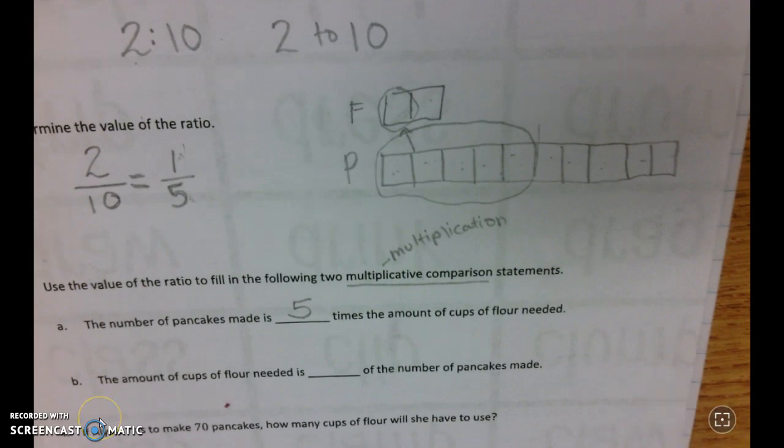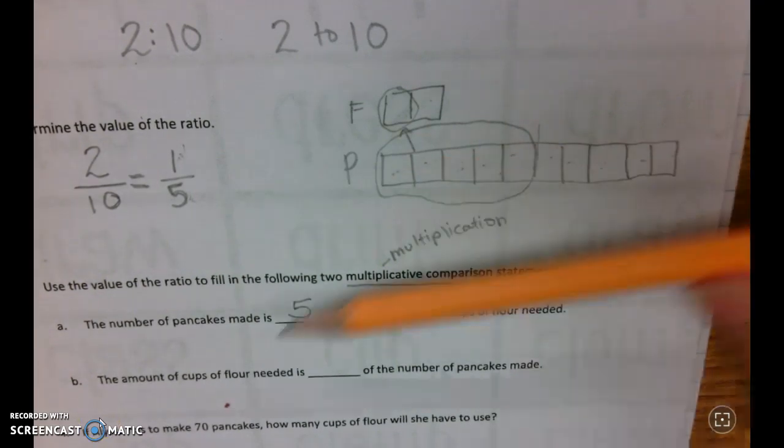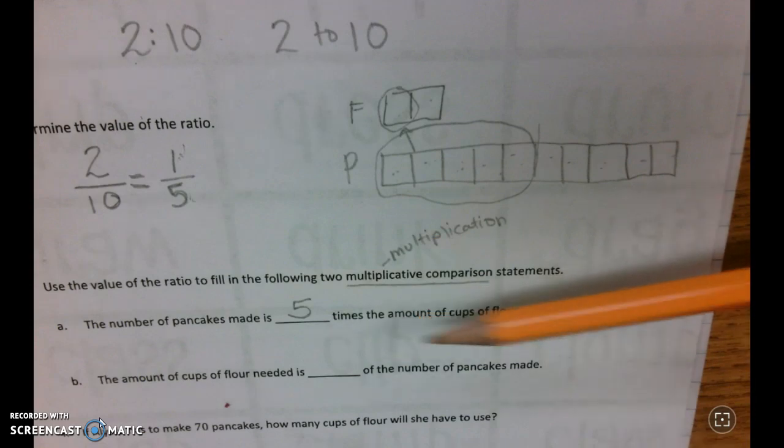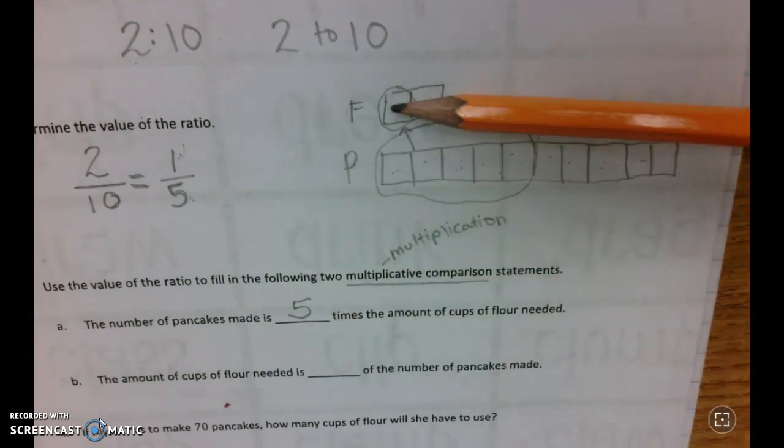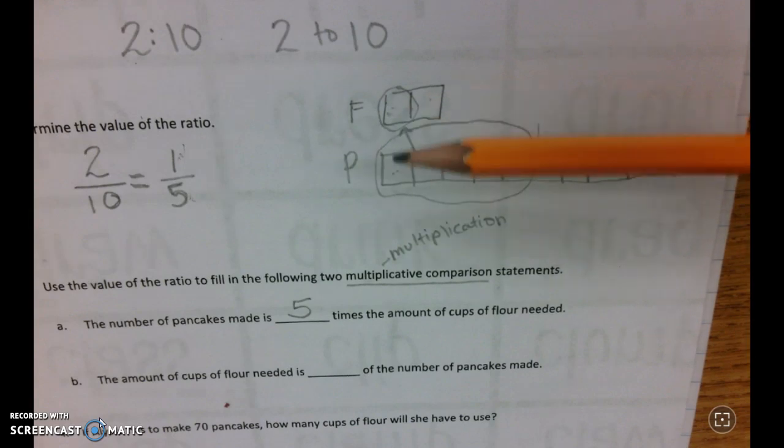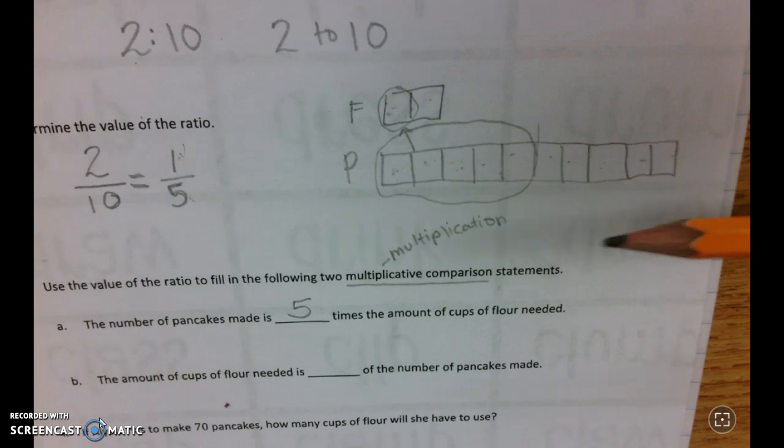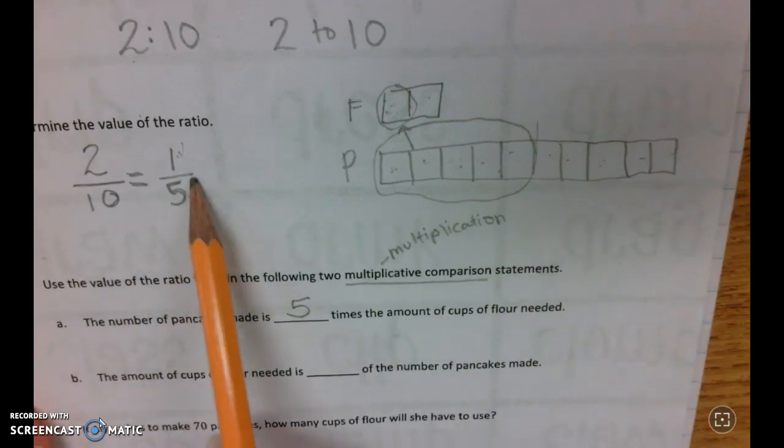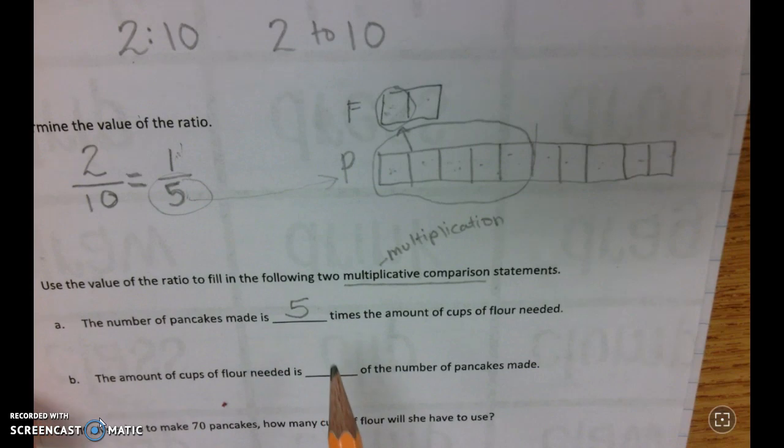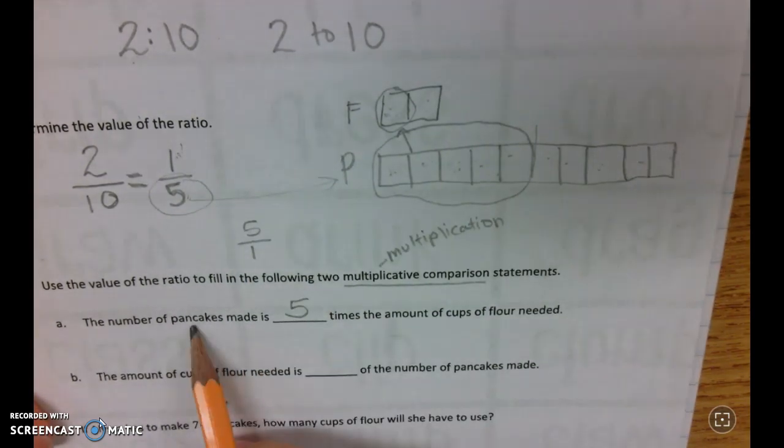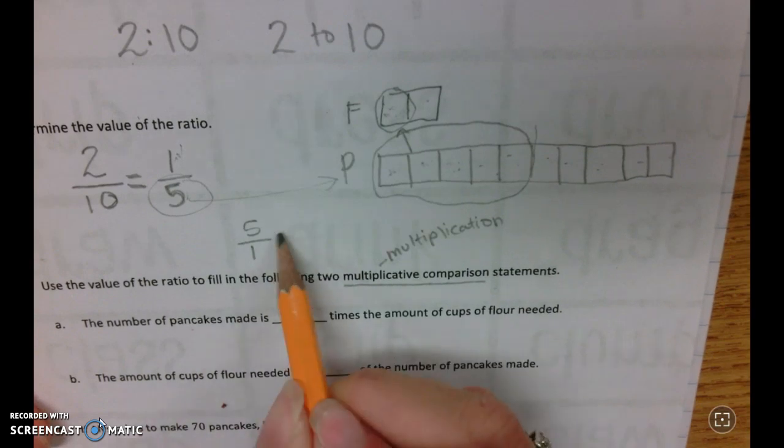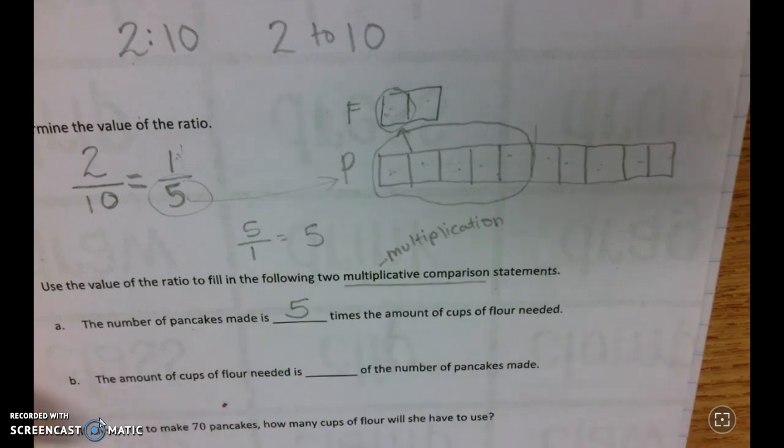So pancakes equals five times flour. If I have one cup of flour, one times five, I would have five times as many pancakes as I have flour. Again, the relationship here is 5 goes with the pancakes, so it would be really 5 to 1 pancakes to flour, which is the same as five times.